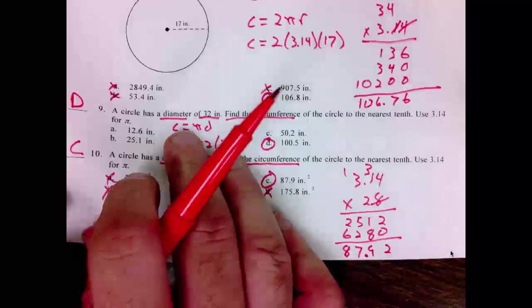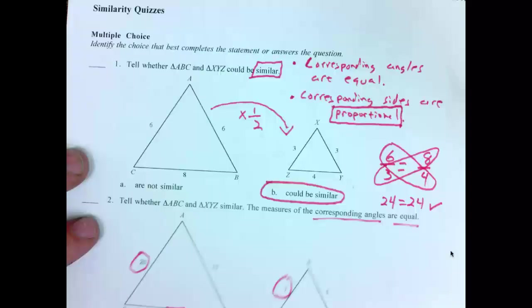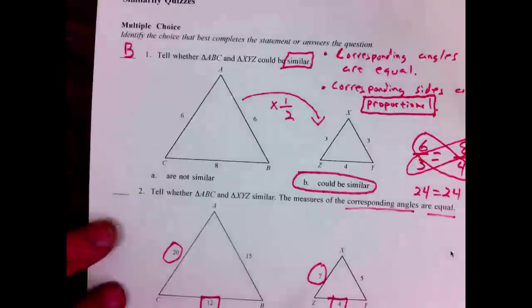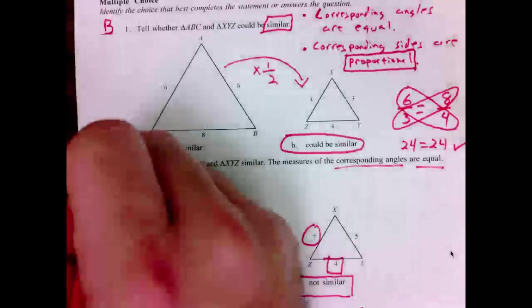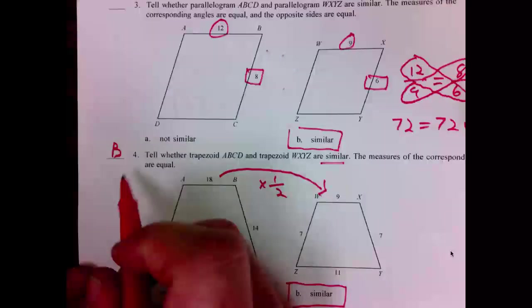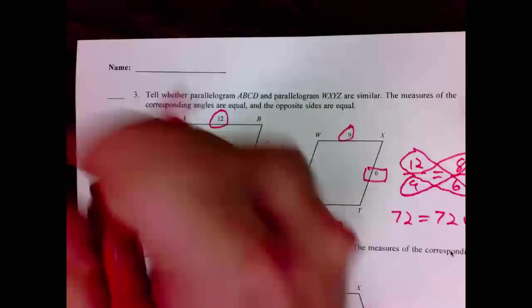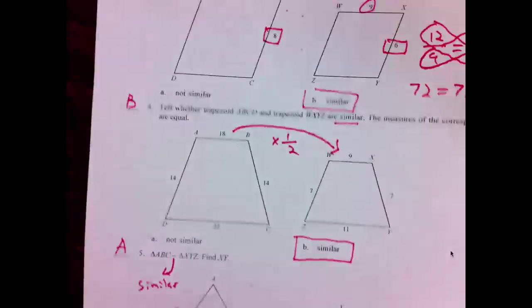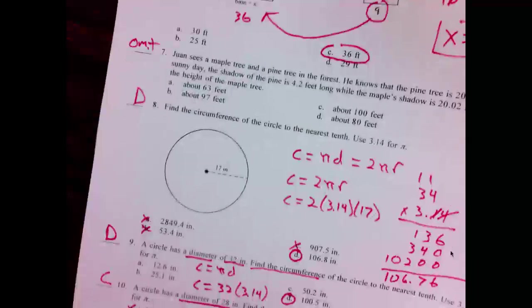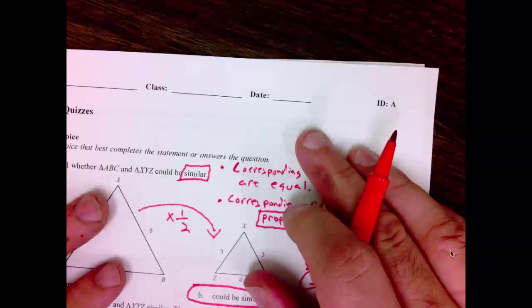Going back over our answers. Number 1 was B. Number 2, B. Number 4, B. Number 3, B. First 4, all B. Number 5, A. 6, C. 7, omit. 8, D. 9, D. 10, C. Count the number of questions that you missed. Write it on the top of your quiz. They're worth 10 points apiece.